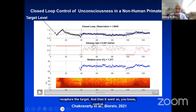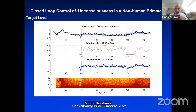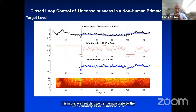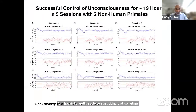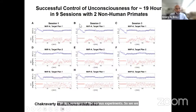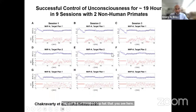This demonstrates to the FDA that closed-loop control is feasible in humans. We're putting together a system to test in humans, hopefully later this year or early next year. We did a total of 19 hours of control across nine sessions in two animals, testing patterns like inverted top-hat and top-hat shapes, with no trouble controlling the animal's level of unconsciousness.